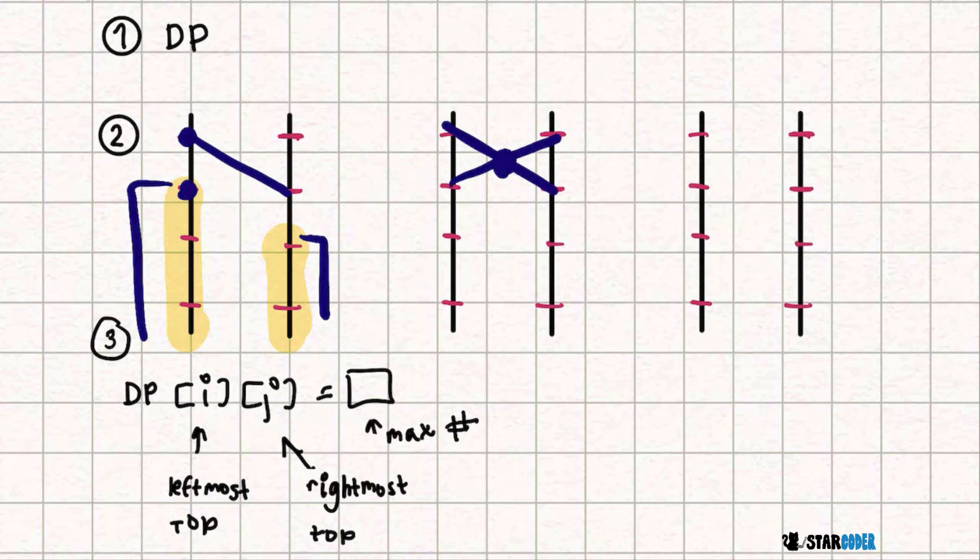Our state is basically going to start here and we're going to say dp[i][j] and we're going to have an if.